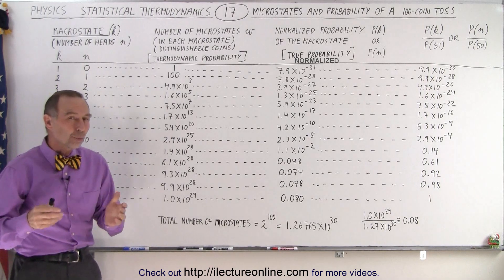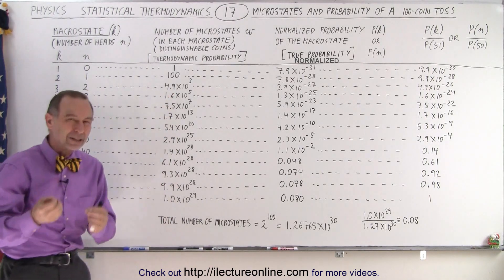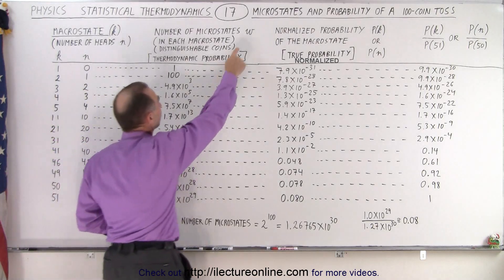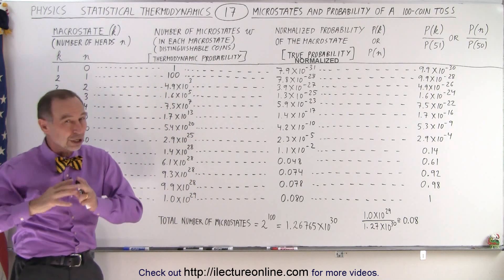So what is the thermodynamic probability? It's simply the number of ways, the number of microstates you can have, the W. So that's known as the thermodynamic probability, and those numbers are usually huge.